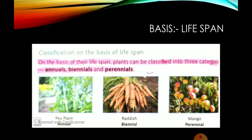Then if we are going on the basis of life span — अगर हम life देखें plants की — then also we are having three categories: annuals, biennials and perennials. Annual means one year, biennial means two years, and perennial means many years.